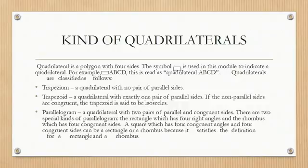A parallelogram is a quadrilateral with two pairs of parallel and congruent sides. There are two special kinds of parallelogram: the rectangle, which has four right angles, and the rhombus, which has four congruent sides. A square, which has four congruent angles and four congruent sides, can be a rectangle or a rhombus because it satisfies the definition for both.